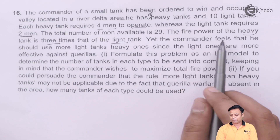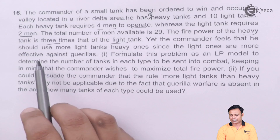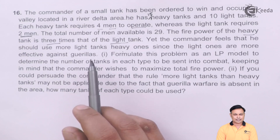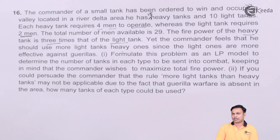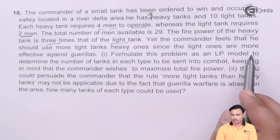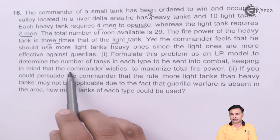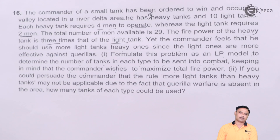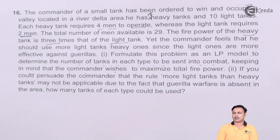The commander feels that he should use more light tanks than heavy ones, since the light ones are more effective against guerrillas — people who attack from behind. In that case you need a very flexible tank which can be easily moved, and that's why the commander prefers light tanks. The problem is to formulate a linear programming model to maximize total fire power.